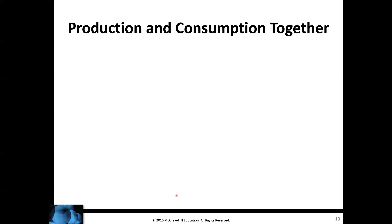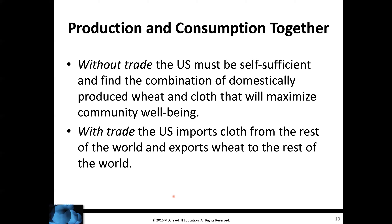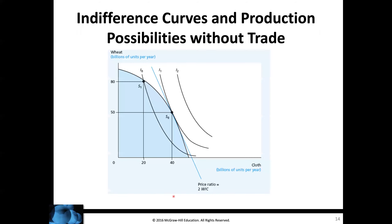Now we're going to put production and consumption together — the production possibility curve plus indifference curves — looking first without trade and then with trade. Without trade, the U.S. must be self-sufficient and find the combination of domestically produced wheat and cloth that maximizes community well-being. Point S0 is the no-trade equilibrium. At any other point on the U.S. production possibility curve, consumers and producers would want to shift toward S0, which is where the highest level of well-being is reached.